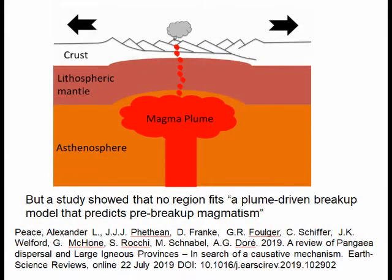Researchers used to think that plumes of hot magma weakened continental crust from below. But a study showed that no region fits a plume-driven breakup model that predicts pre-breakup magmatism.